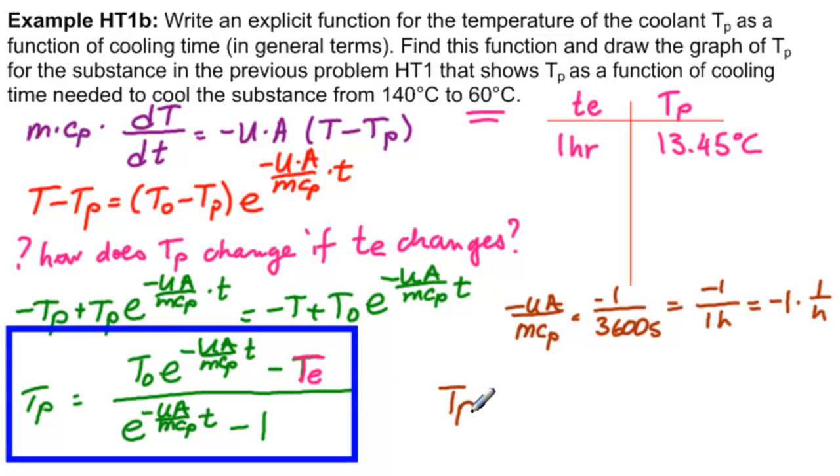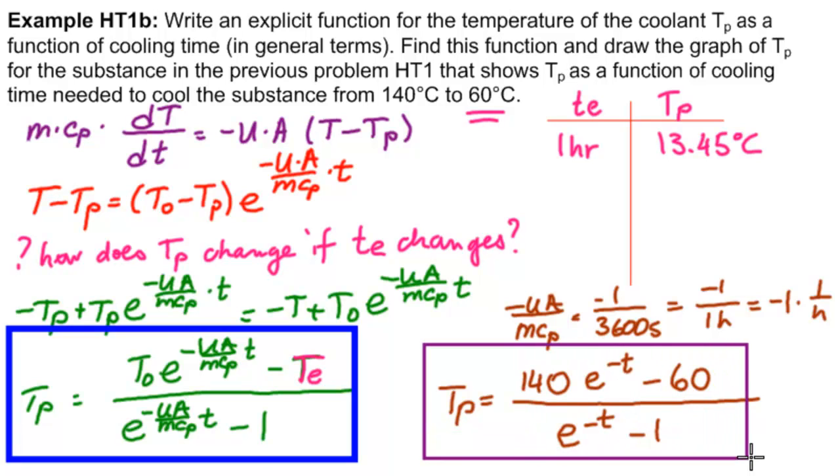So what do we get? We get TP equals, what was T0? 140, E minus UA is minus 1, so minus T. T is now an hour, so the hours cancel. Minus 60 over E to the minus T minus 1. And it probably would be an excellent idea to see if we substitute 1, whether we get 13.45 to check this before continuing. And indeed, it does work.